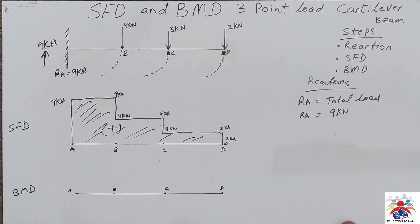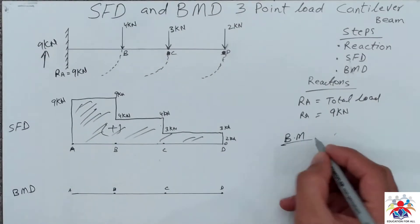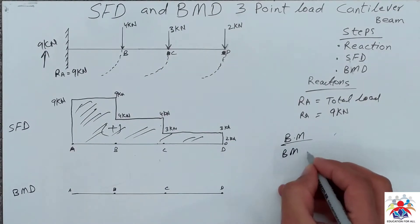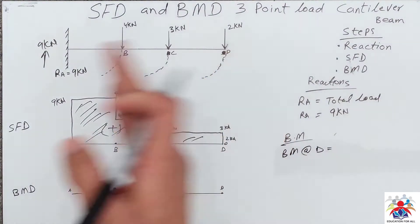Now we have to calculate bending moment diagram. I mean we have to draw bending moment diagram. Before drawing bending moment diagram we have to calculate it. So bending moment at point D: we draw bending moment from right to left.